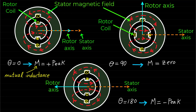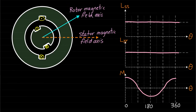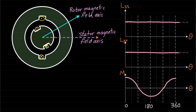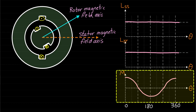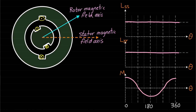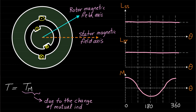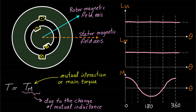Basically, we can represent the mutual inductance mathematically by M of theta equal to M-hat cosine theta, where M-hat is the peak value. Summarizing the relationship of all inductances with rotor position for this machine structure, we can clearly notice that the mutual inductance is the only inductance that changes with rotor position. Therefore, we expect only one torque component due to the change of mutual inductance for this machine structure. This type of torque can be called mutual interaction torque, also called the main or primary torque. Note that this mutual inductance torque is generated in almost all types of machines.